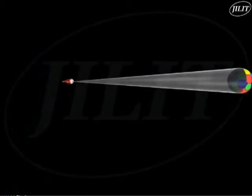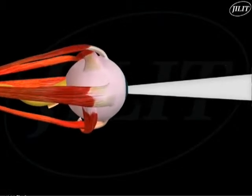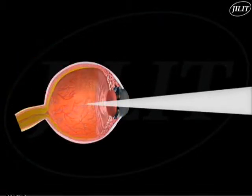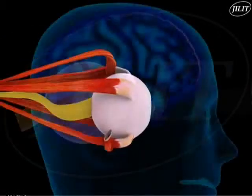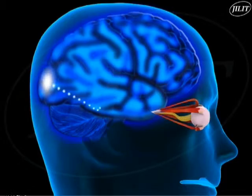So, light rays reflected from an object enter the eye, get focused, converted into electrochemical signals, delivered to the brain, and seen as an image.